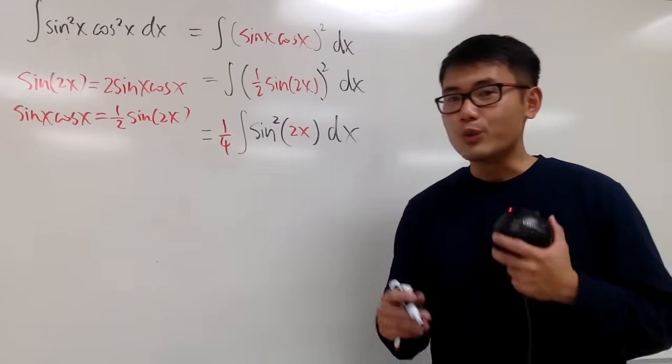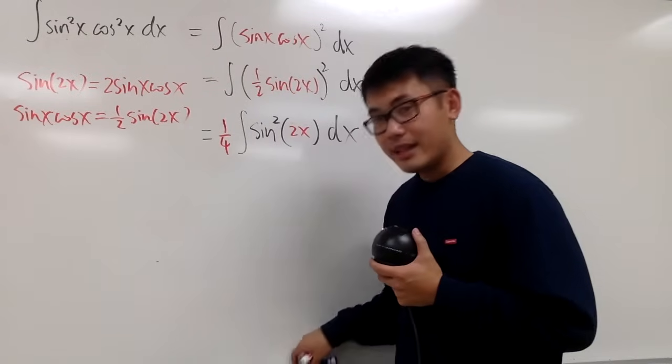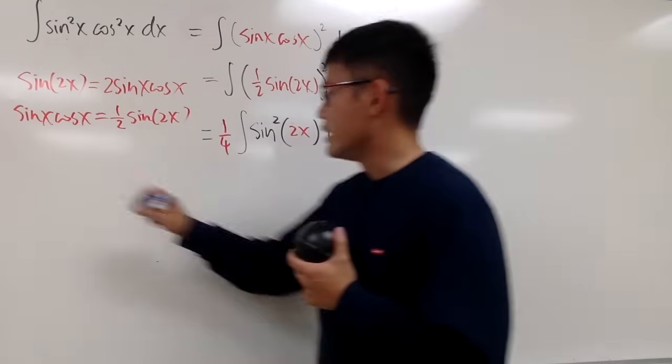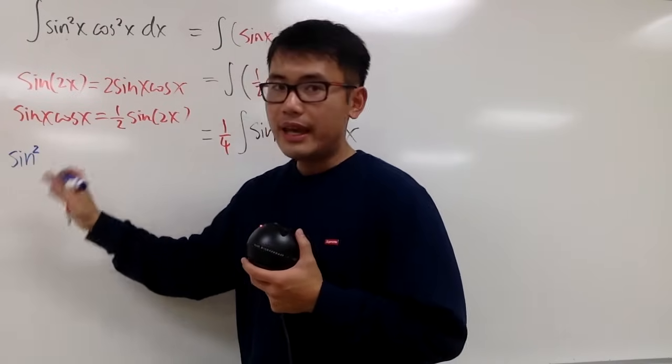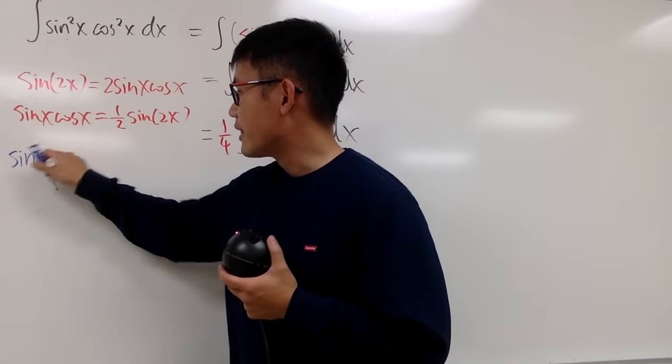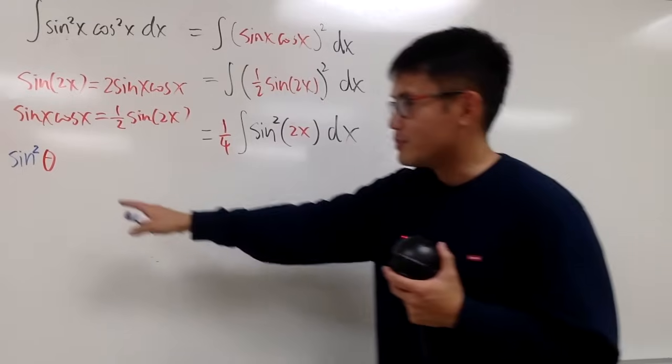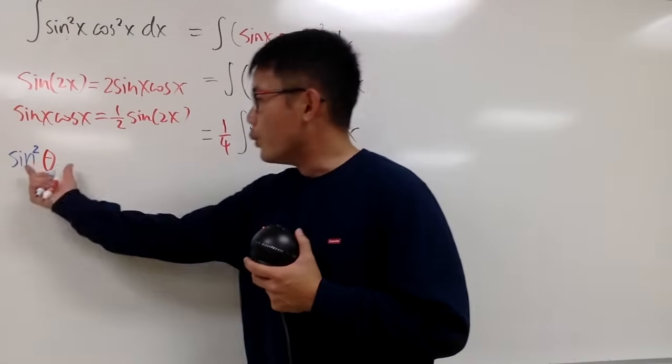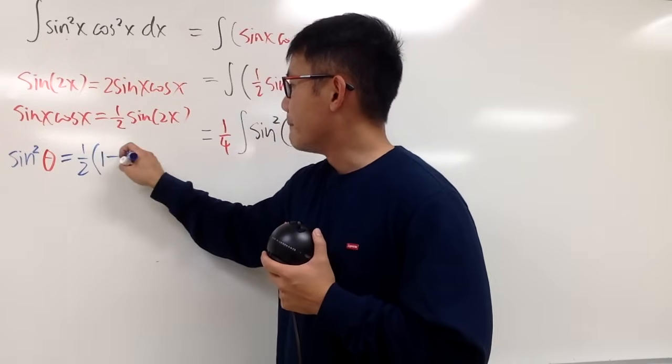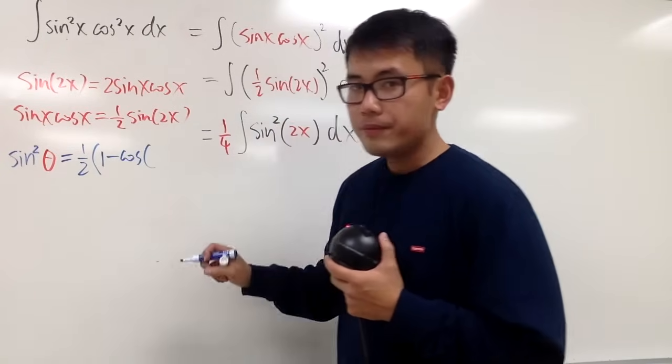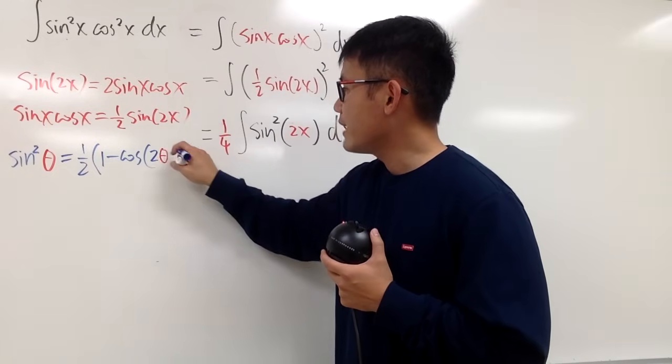And hopefully you guys have seen my video on how to integrate sine squared with just x inside. Because the step now is similar. What we'll be doing is that we'll be using the power reduction formula for sine squared. Okay? So what do I mean by that? Let me put it down for you guys on the side. When we have sine squared, and if the angle inside, let me just write it down as theta. Because now the angle inside is 2x, so it's different.